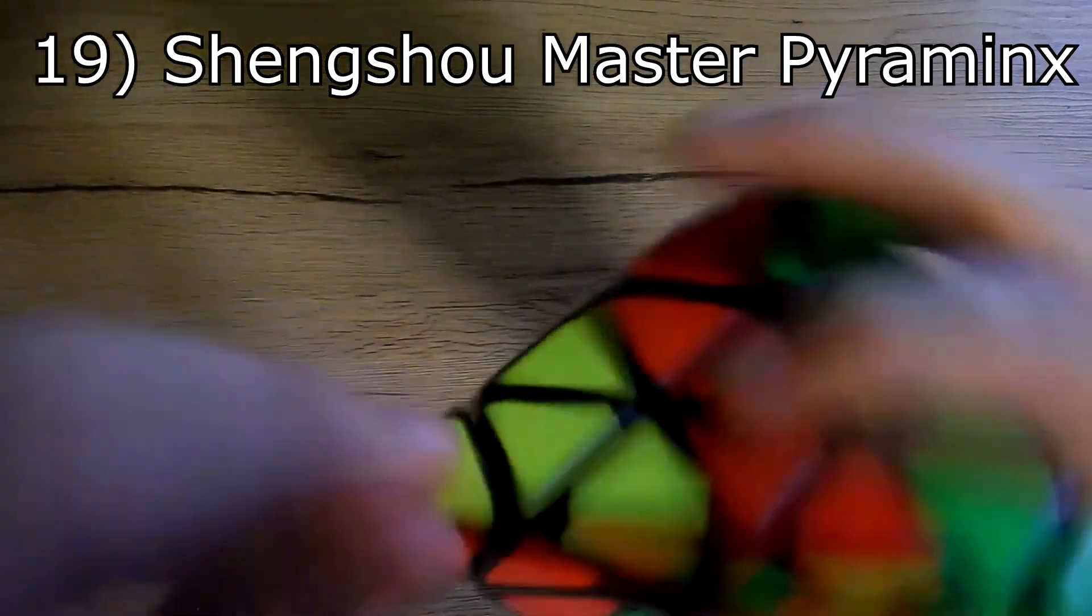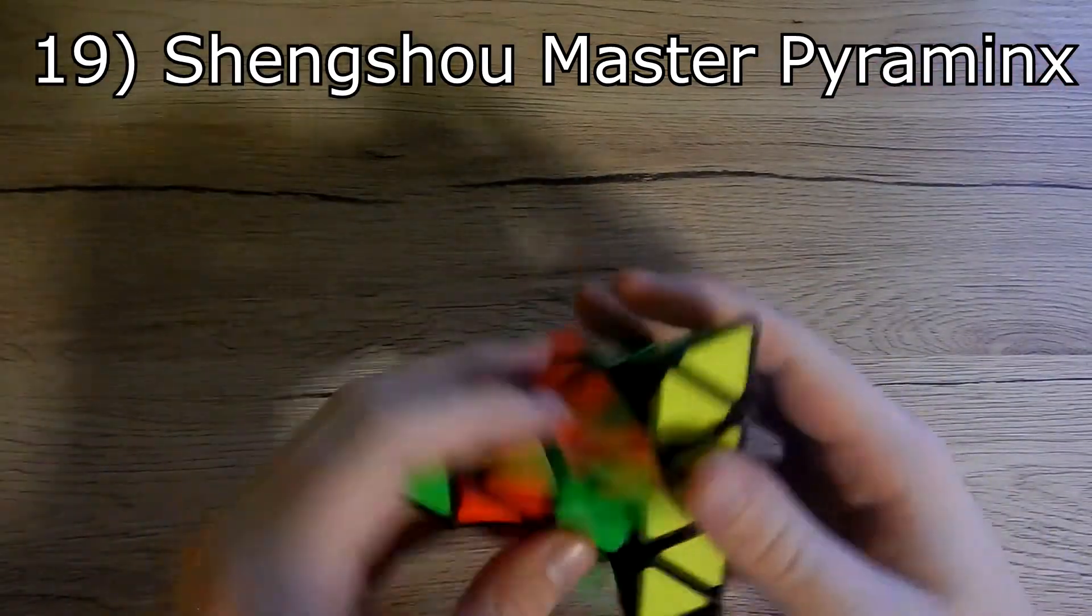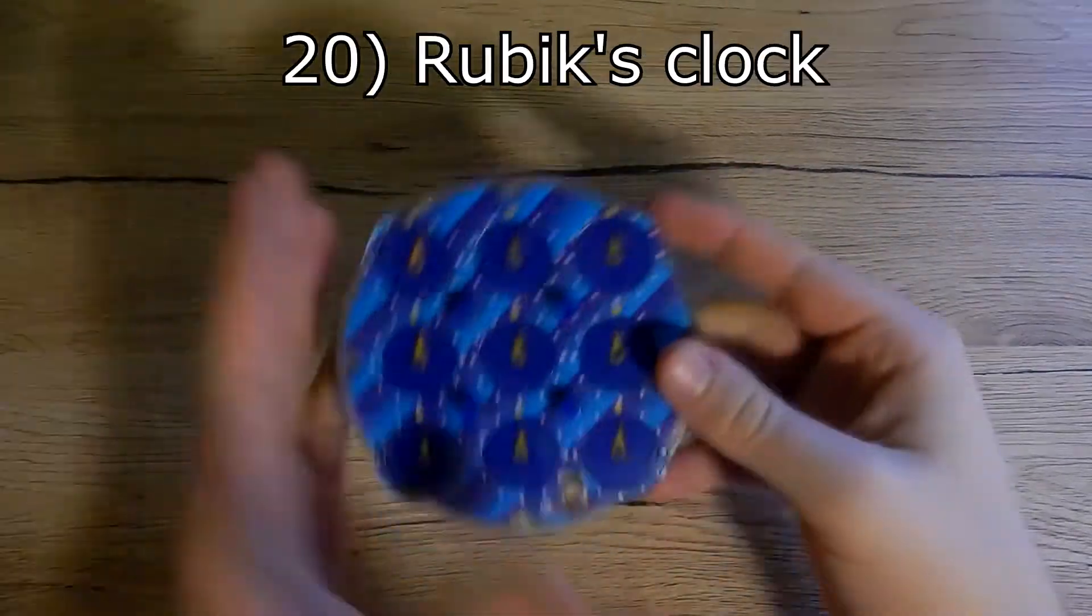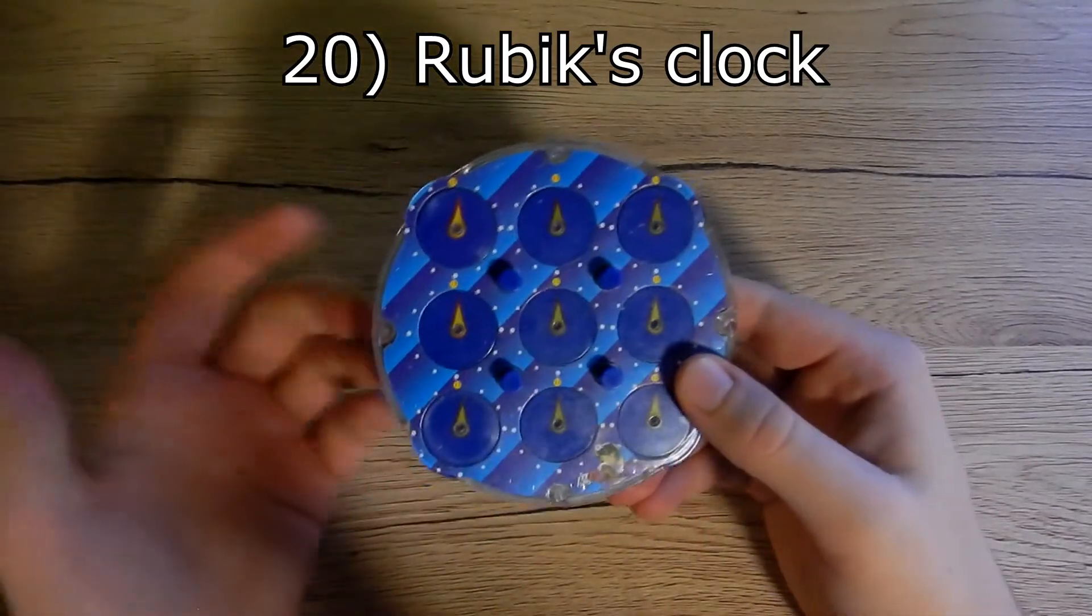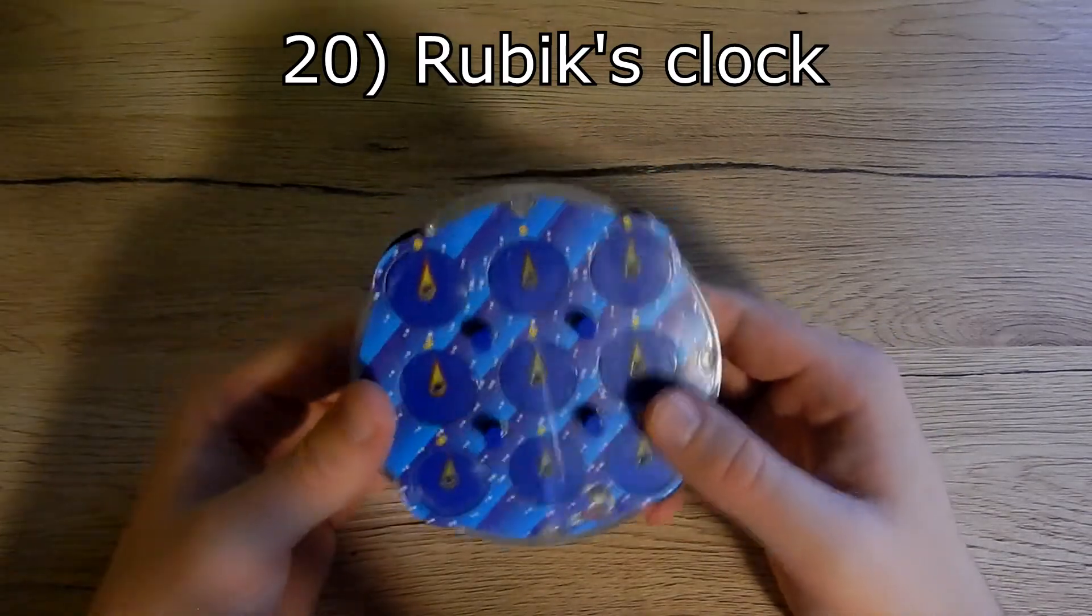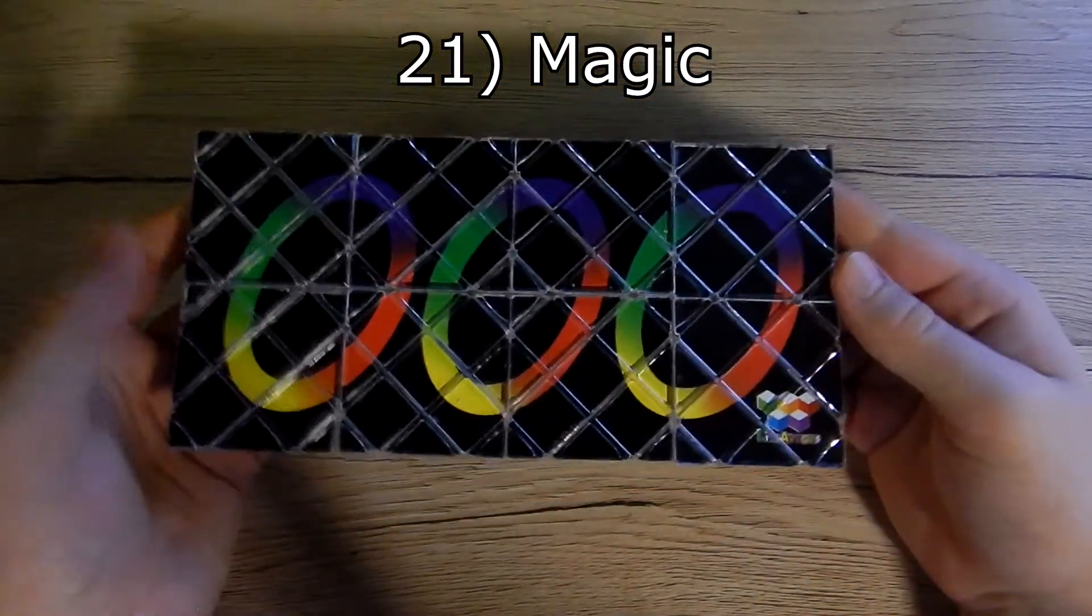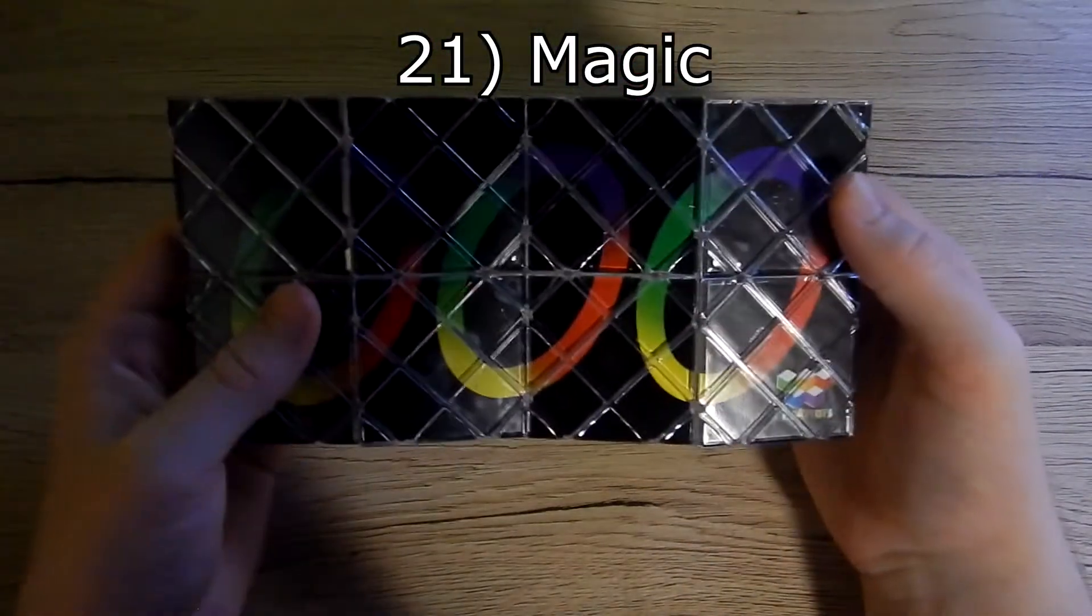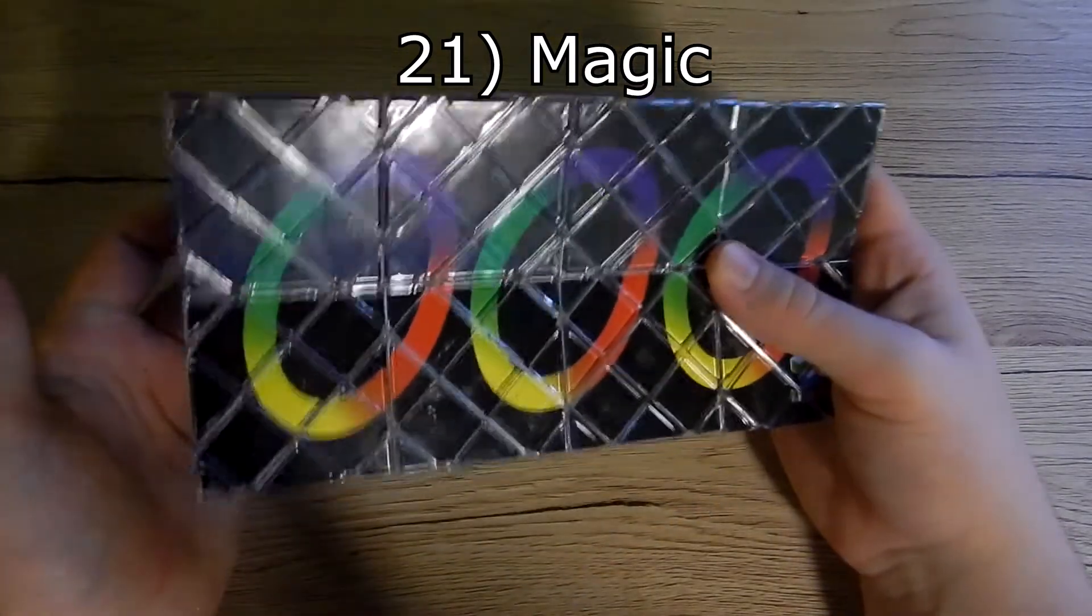Next we have a Rubik's clock, and it was the cheapest one and the only one I could find before Qiyi clock which I want to buy in the future. Next we have magic from this company, I think it's Lizatoys. I like the magic, it's very satisfying puzzle.